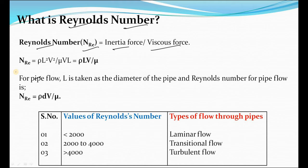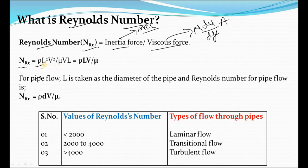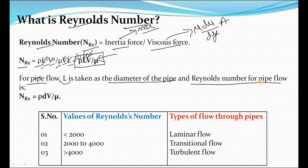Writing it mathematically, Reynolds number is denoted by N_RE. Inertia force is mass times acceleration, written as M×A. Viscous force is μ(du/dy)×area, where du/dy is written as V/L. The inertia force works out to ρL²V² and the viscous force to μVL. Simplifying, Reynolds number equals ρLV/μ. Here μ is dynamic viscosity, L is a length, and V is mean velocity. For pipe flow, L is taken as the diameter D of the pipe, so Reynolds number for pipe flow is DVρ/μ.